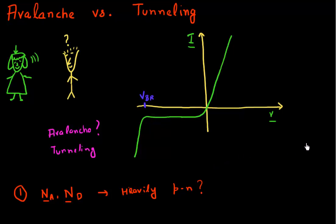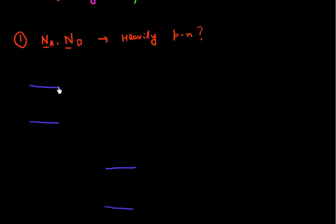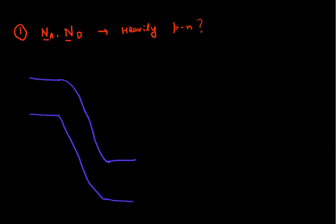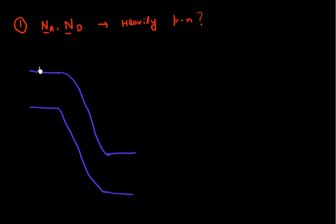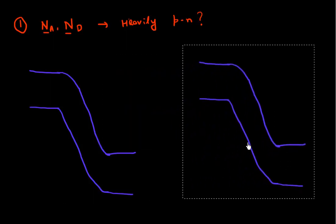You go back to your lab and try to see how you can help her further. You start thinking about the different mechanisms and try to draw the band diagram of this PN junction. You've become quite dexterous in drawing these band diagrams. So you draw this band diagram and you're thinking about how you can distinguish the avalanche process from the tunneling process. You draw one band diagram for tunneling and another for the avalanche process.